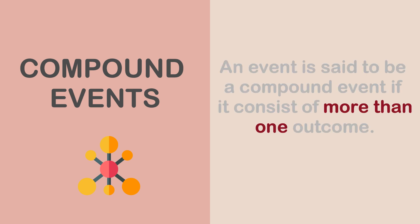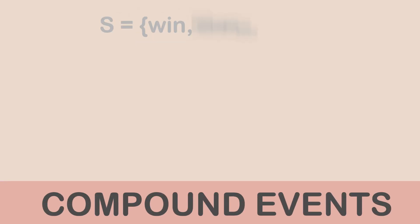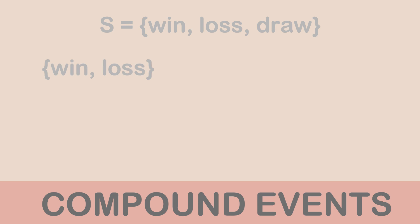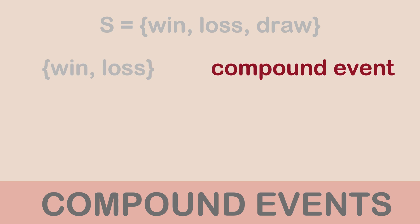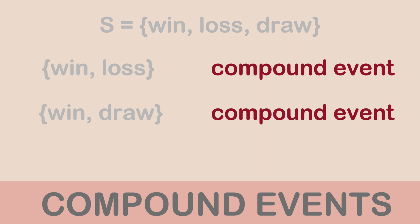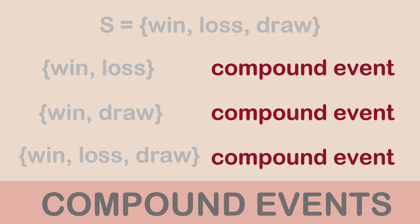Contrary to the simple event, we have the compound event. An event is said to be compound if it consists of more than one outcome. Going back to the football match experiment, if I pick win and loss, or win and draw, or win, loss, and draw together — those are all compound events because they contain more than one outcome from the sample space.